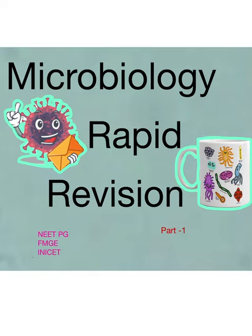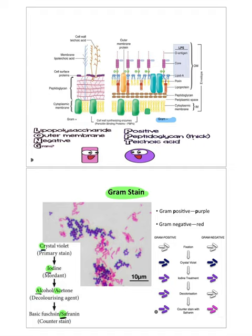Let's get started. First of all, we have gram positive and gram negative — the most important thing we come across. So the differences: gram positive has a thick peptidoglycan layer, while gram negative has a very thin peptidoglycan layer. In gram negative, the outer membrane has three things: O antigen, core, and lipid A.